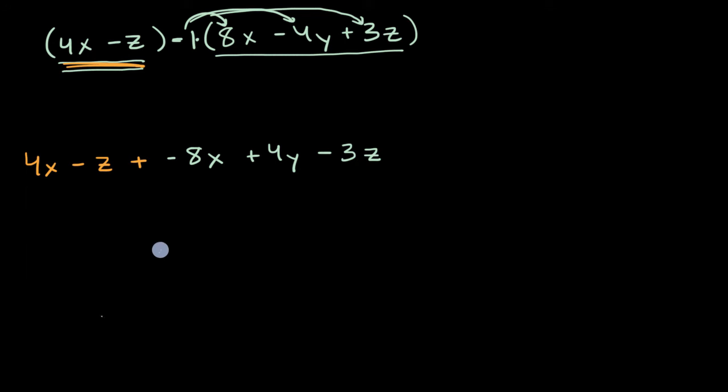And now we can add terms that are dealing with the same variable. So we can look at this 4X, and then we have a negative 8X. So what's 4X plus negative 8X? Well, that's going to be negative 4X. And then we could go to, actually, let me go to Y next, as my brain wants to go from X to Y to Z. I could have done Z first. But there's no Y over here, and we just have a 4Y over here. So I'll just rewrite that, plus 4Y.